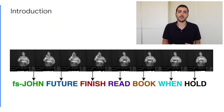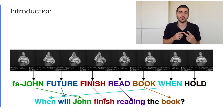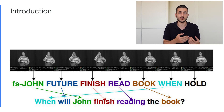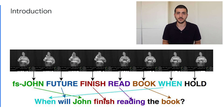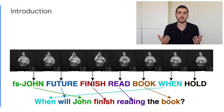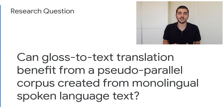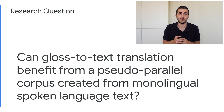Sign language translation is often decomposed into video to gloss recognition and gloss to text translation, where glosses are a sequence of transcribed spoken language words in the order in which they were signed. Given the similarly high overlap between sign and spoken language pairs when using glosses, we ask: can gloss to text translation benefit from a pseudo-parallel corpus created from monolingual spoken language text?